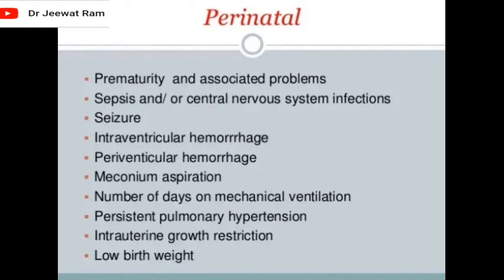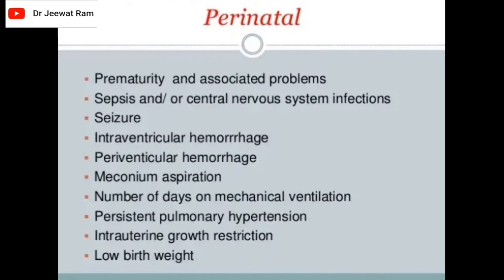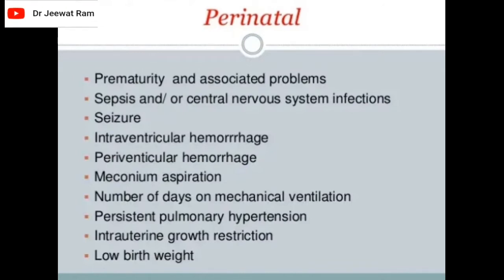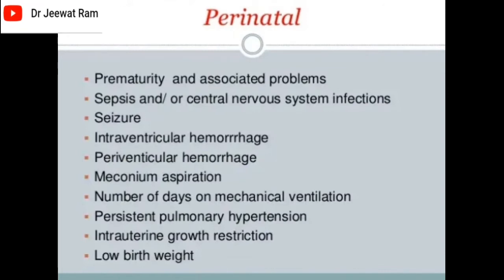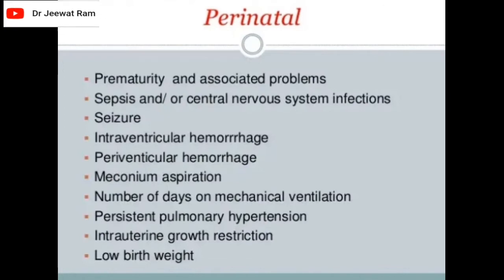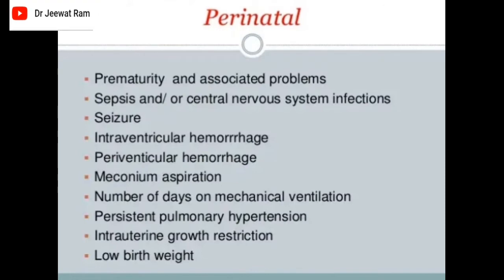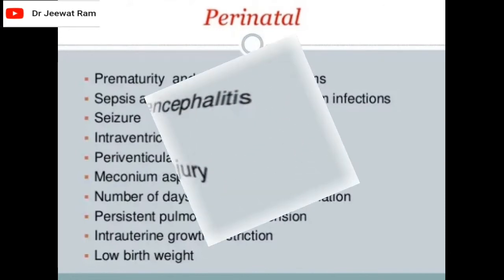Perinatal causes include prematurity and associated problems, sepsis or central nervous system infections, seizures, intraventricular hemorrhage, periventricular hemorrhage, meconium aspiration, number of days on mechanical ventilation, persistent pulmonary hypertension, intrauterine growth restriction, and low birth weight.